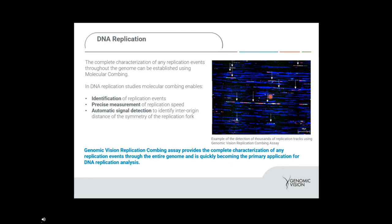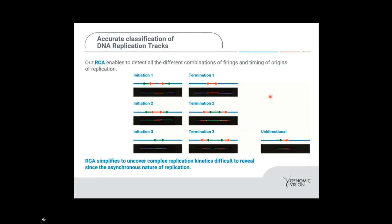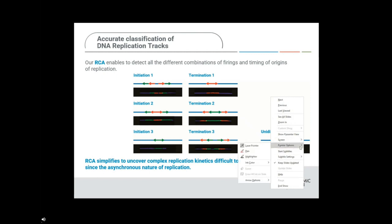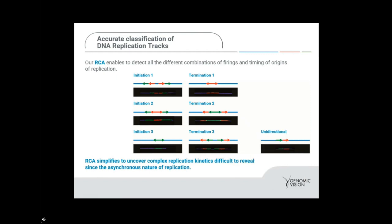You can get a lot more detailed in it, as shown in the accurate classification of DNA replication tracks. Using our genomic Morse code technology, you can see the initiation event taking place here in green, red, blue, red, green. The second initiation event with the longer red signal and the third initiation event in green are also visible, as are the termination events. The replication combing assay enables the detection of all the different combinations of firings and timings of the origins of replication, helping to simplify uncovering complex replication kinetics not possible by other methods.